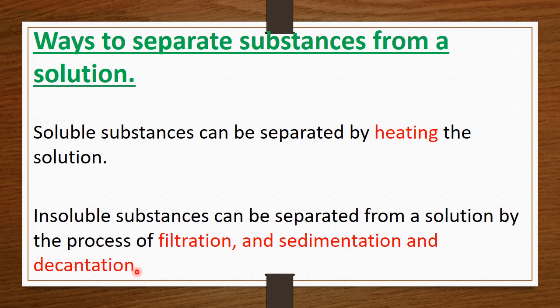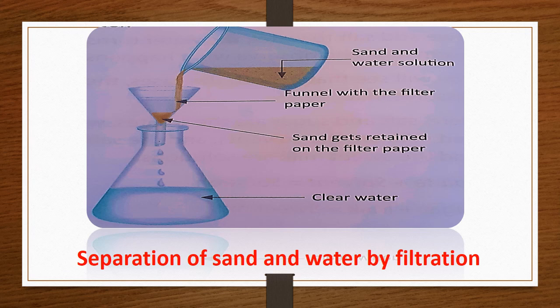Insoluble substances can be separated from a solution by the processes of filtration, sedimentation and decantation. Now, what is filtration? Insoluble substances can be separated from a solution by the process of filtration — for example, the separation of sand and water by filtration.